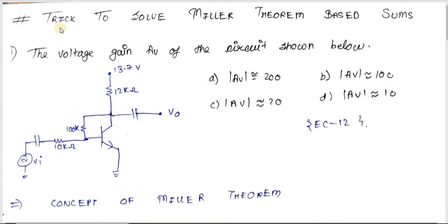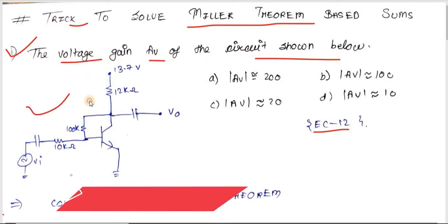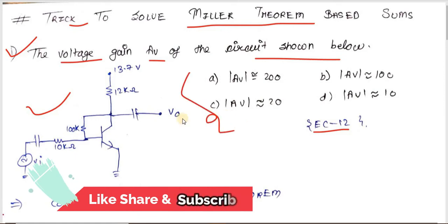Hello friends, today we are going to see the trick to solve Miller theorem based amplifier problems. The first problem is from EC 2012: the voltage gain Av of the circuit shown below is — with four options provided.